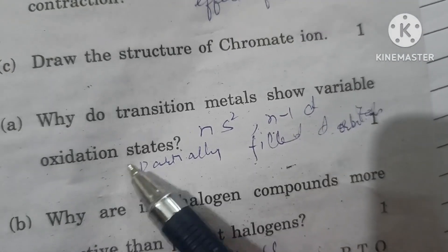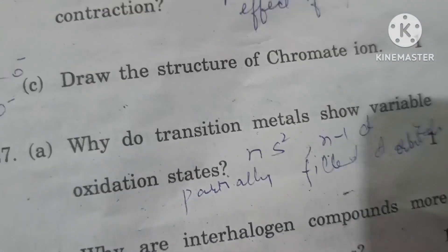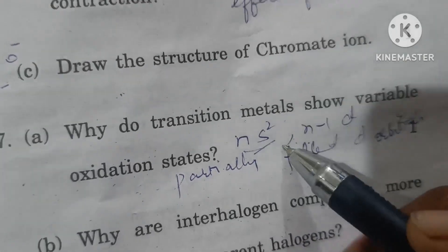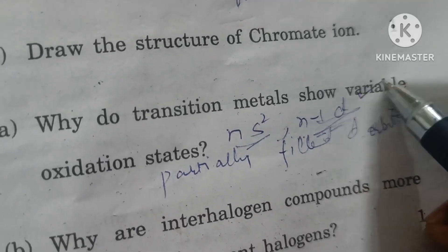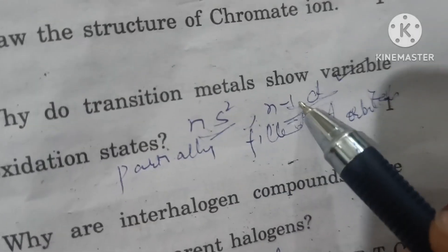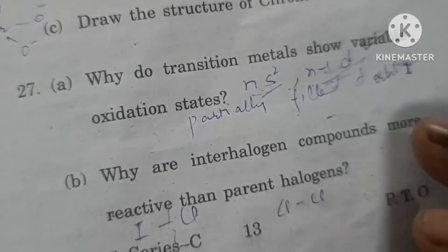Why do transition metals show variable oxidation state? Because their ns electrons as well as (n-1)d electrons can participate in bond formation, showing different variable oxidation states.